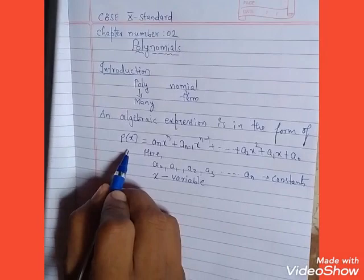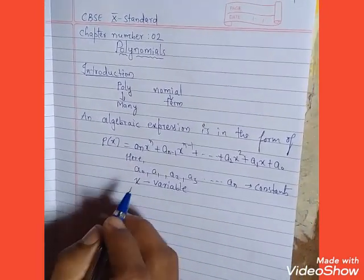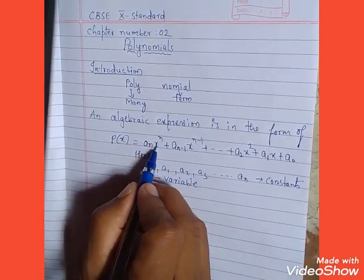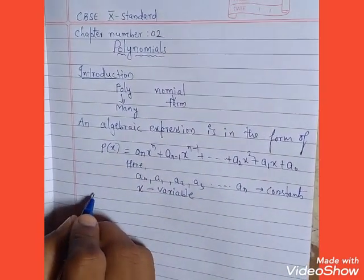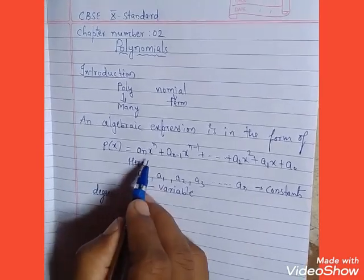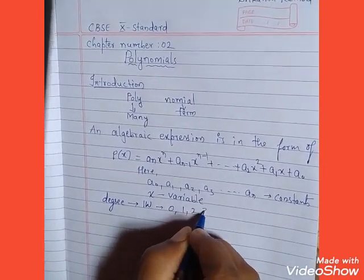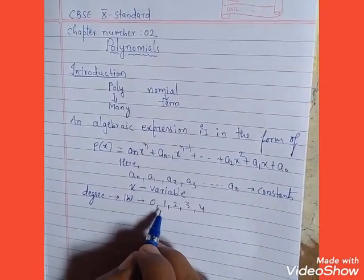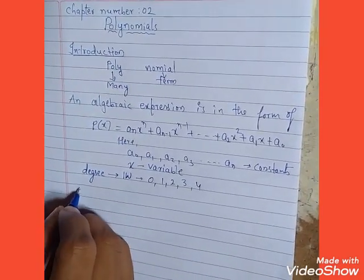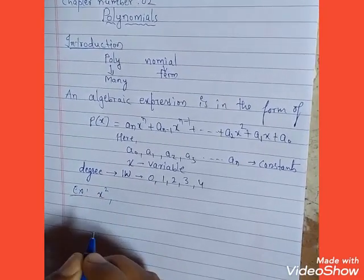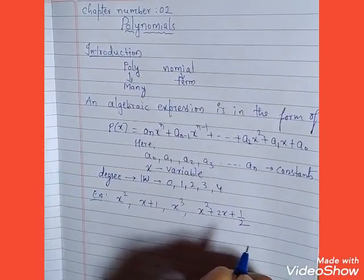Instead of x you can take any other variable: y, z, a, b, c, or anything. The very important thing is that the power of the variable will always be a whole number. The degree of the variable in the algebraic expression will always belong to whole numbers: 0, 1, 2, 3, 4 — it does not include any negative or irrational numbers. For example, x², x+1, x³, and x²+2x+½ are all polynomials.